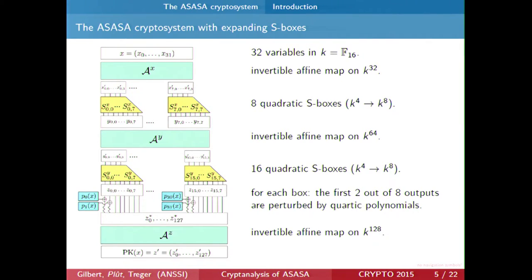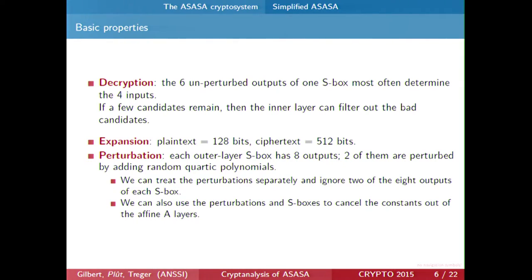The public key is just the composition of all these polynomials — they are all polynomials, so this is a quartic polynomial at the output. For decryption, on the last layer the S-boxes are perturbed by perturbation polynomials, but most often from only the six unperturbed outputs you can get a small list of candidates for the inputs, and then filter with the first layer to get only the good candidates. There is an expansion factor of four: the plaintext is 128 bits and the ciphertext is 512 bits.